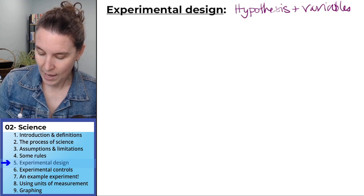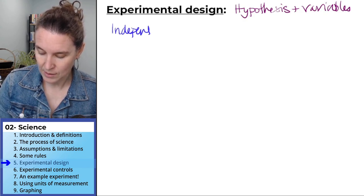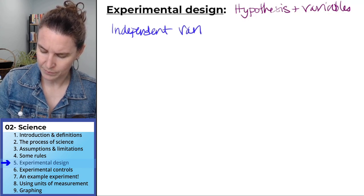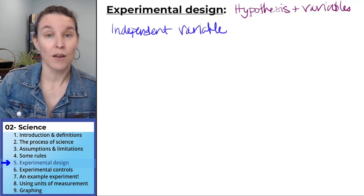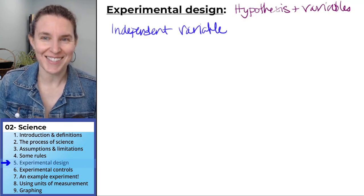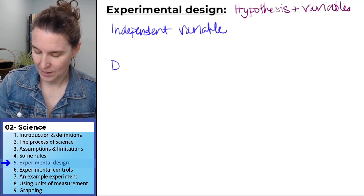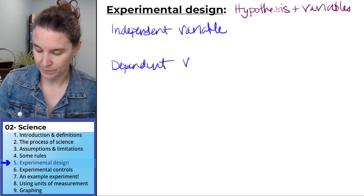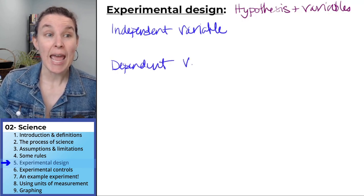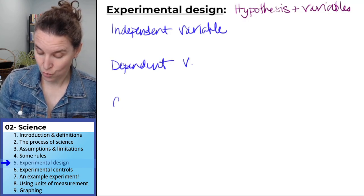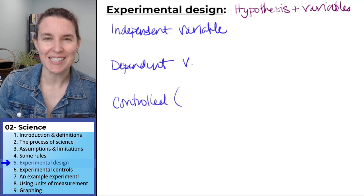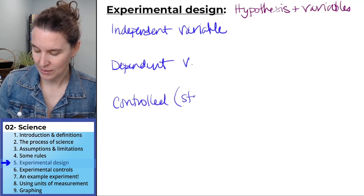We have the independent variable, which suggests the presence of a dependent variable, and we have a controlled, or I'm going to say it standardized variable.